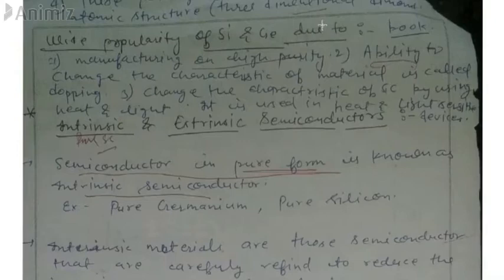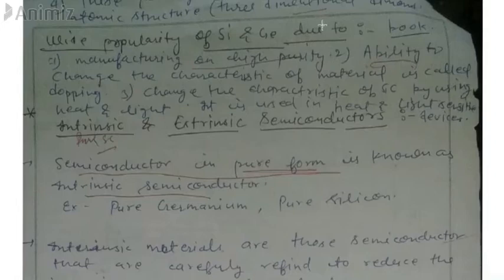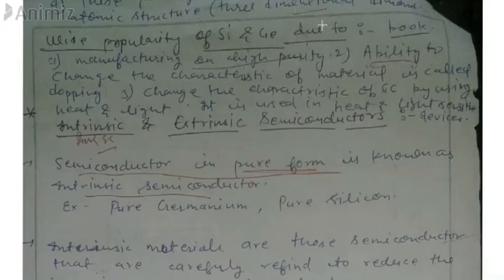Silicon and germanium are widely used as semiconductors. When we think about semiconducting elements, silicon and germanium are the primary choices. The first reason is that manufacturing at high purity is possible for silicon and germanium.